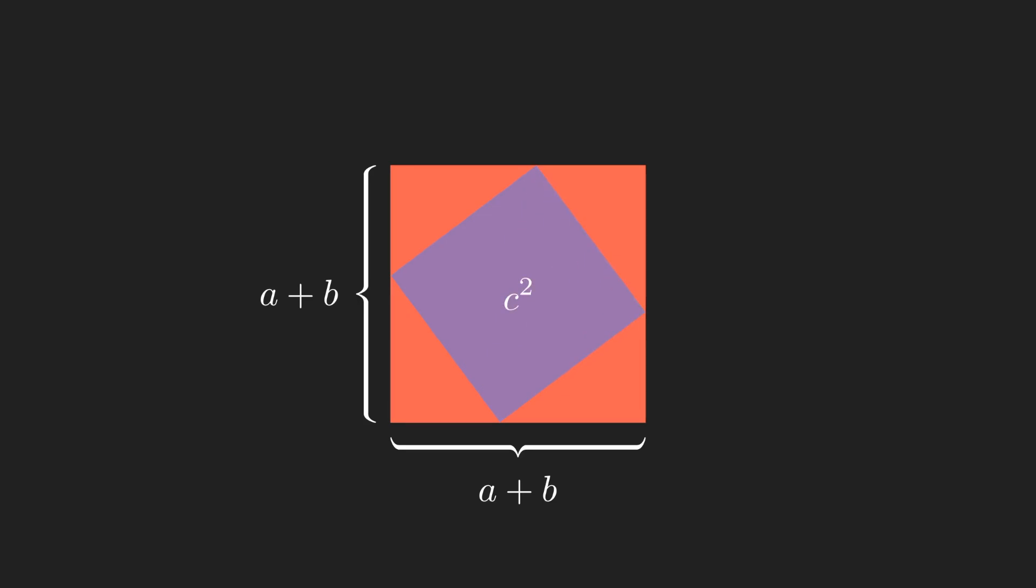From this we can construct a formula. The area of our large square is equal to the area of our smaller square plus the area of our four triangles. Our large square has the area A plus B all squared. Our smaller square has the area C squared.